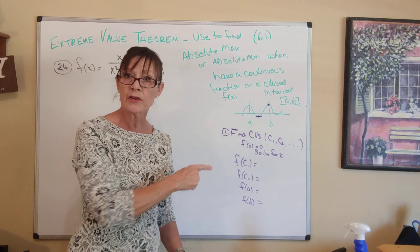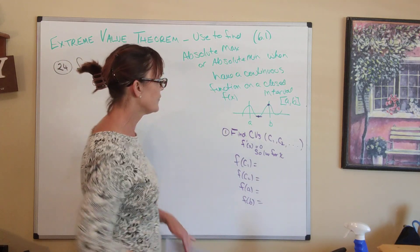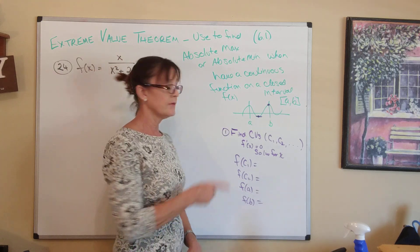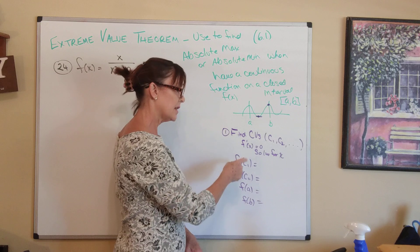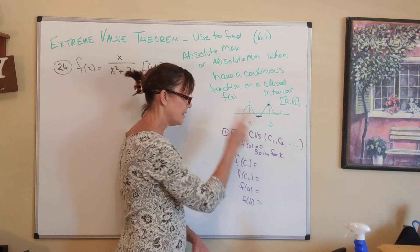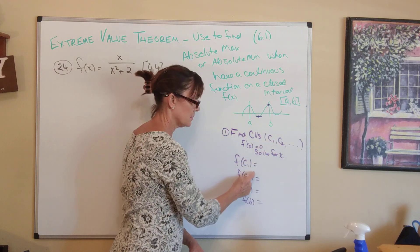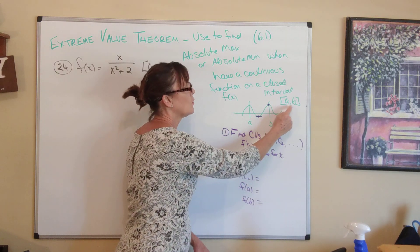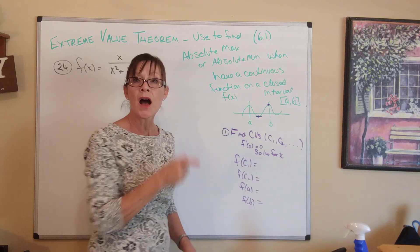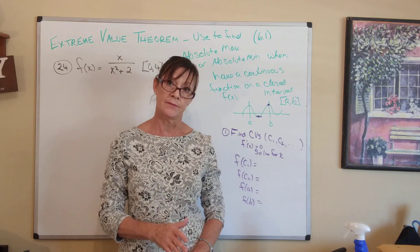To apply this theorem, you take the first derivative, set it equal to zero, and solve for those values. These are called the critical values. Then you plug the critical values as well as the endpoints into the original function. The highest one is the absolute max and the lowest one is the absolute min.